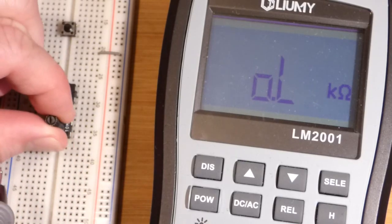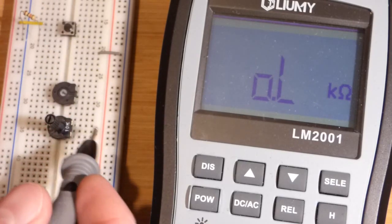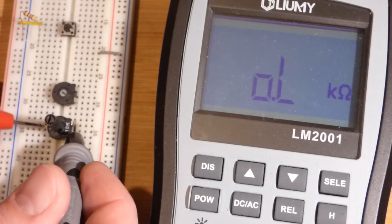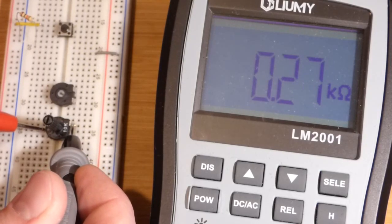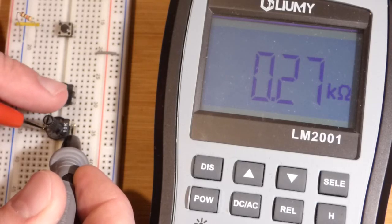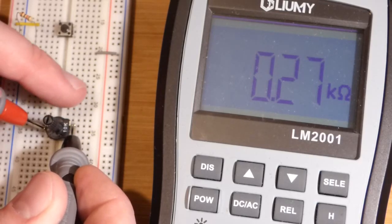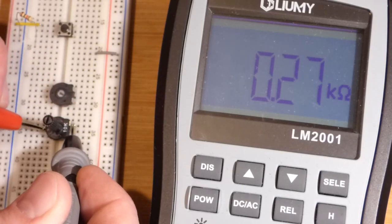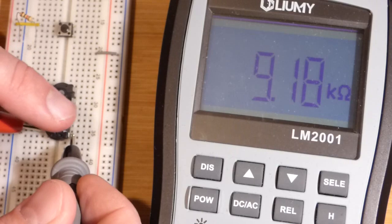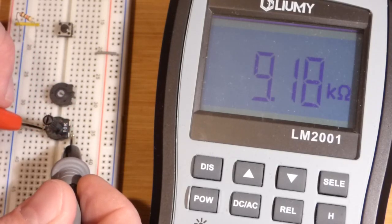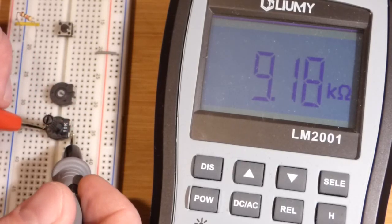I'm going to set it most of the way up here to keep it from going all the way to zero. And you can see we've got 0.27 kilo ohms. We turned it up that way so the resistance went down - the distance across the resistive element between these two points is less, whereas it's greater over here. So we have almost the full resistance now, 9.18 kilo ohms.